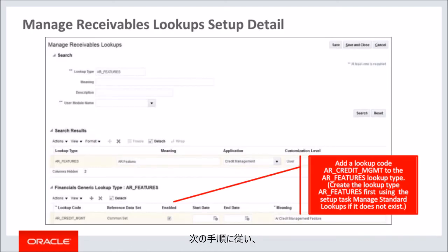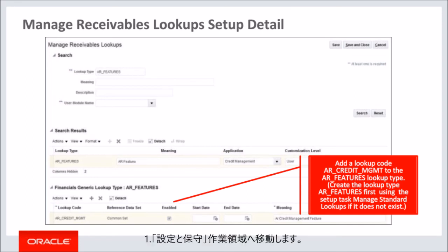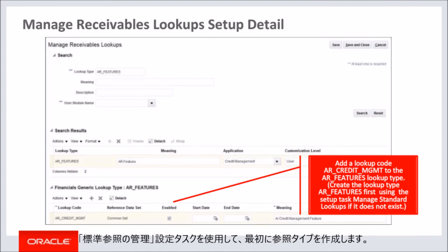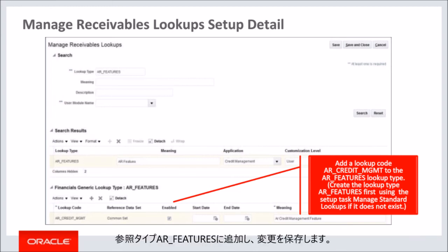The first setup you need to do is to enable the credit management feature. Navigate to the setup and maintenance work area, then search for the setup task manage receivables lookups. On the manage receivables lookups page, search for the AR_FEATURES lookup type. If this lookup type does not exist, you can create it first using the setup task manage standard lookups. Then add a lookup code for credit management to the AR_FEATURES lookup type and save the changes.